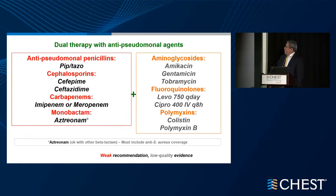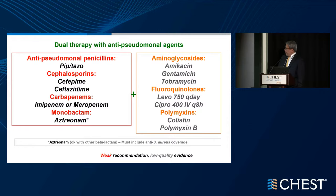Dual therapy for pseudomonal agents includes one antibiotic from the left-hand box and one on the right — a combination approach. Again, this is a weak recommendation, but the initial recommendation for broad-spectrum empiric coverage is to consider this option.